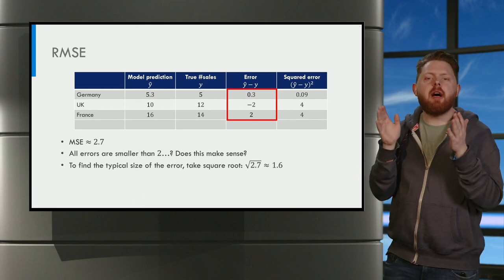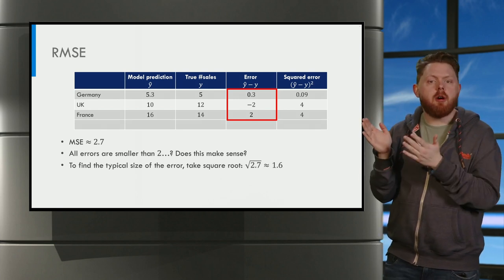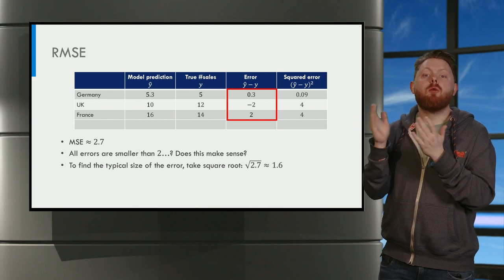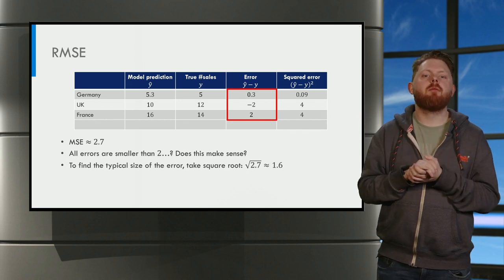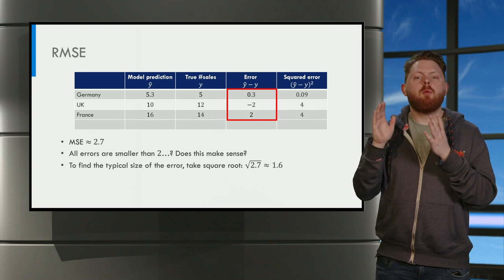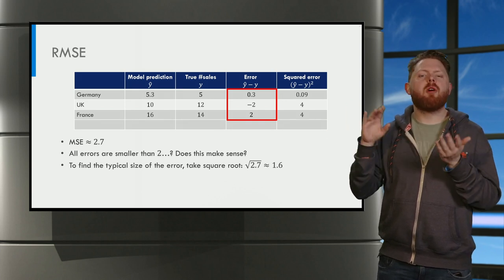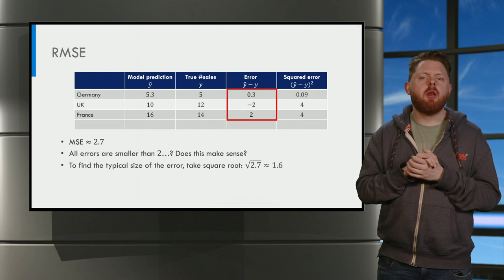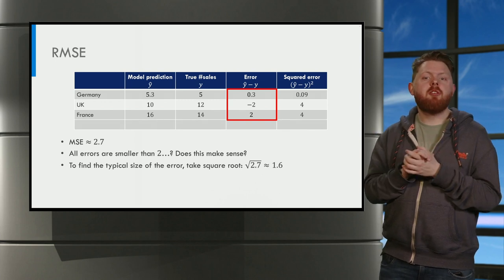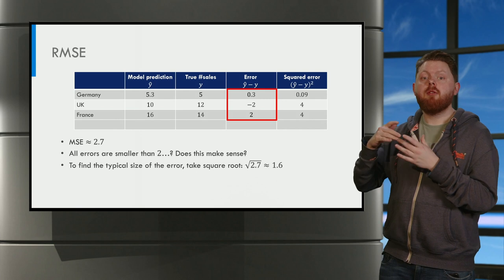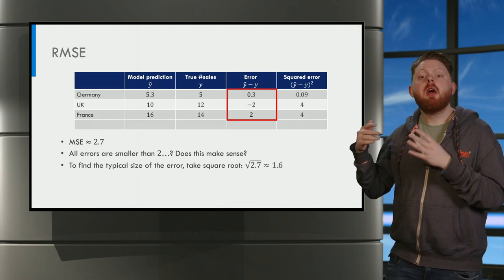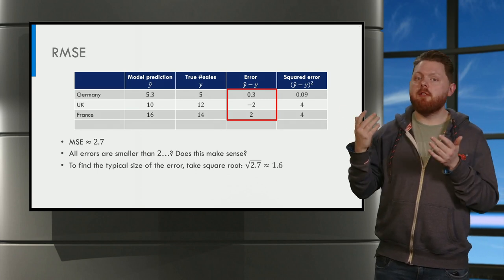Well, to find the typical size of your error, you should take the square root of the mean squared error. So we take the root of 2.7 and we find 1.6. This seems much more reasonable given we have two errors of size 2 and one error of size 0.3.